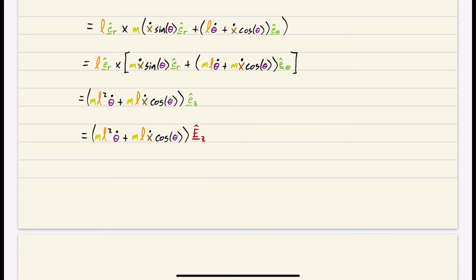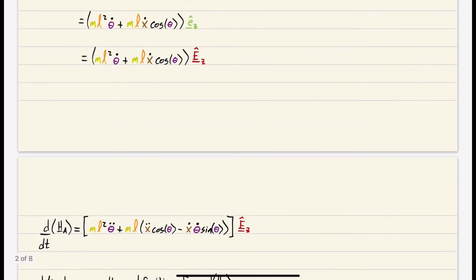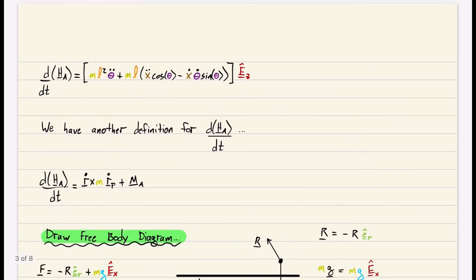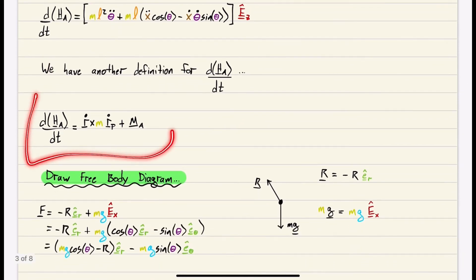Taking the derivative of H_A: mL and m are constants, so we apply the product rule to X_dot*cos(theta). That gives X_double_dot*cos(theta) + X_dot*(−theta_dot*sin(theta)). Since d(EZ)/dt = 0 (inertially fixed), the result is d(H_A)/dt = (mL²*theta_double_dot + mL*X_double_dot*cos(theta) − mL*X_dot*theta_dot*sin(theta))*EZ. We'll keep this result and come back to it.